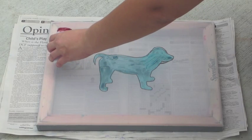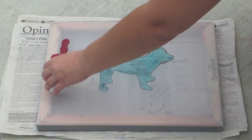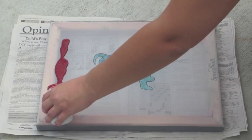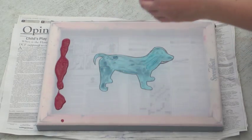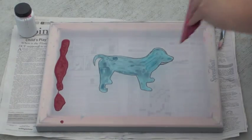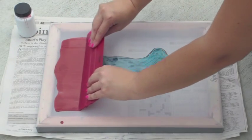And I'm just going to pour some screen filler. You want to pour about that amount, a pretty thick line that you're going to drag down across the screen. You'll see me do that in just a second. And you're just going to take your squeegee and you're going to do one pass, just like this.